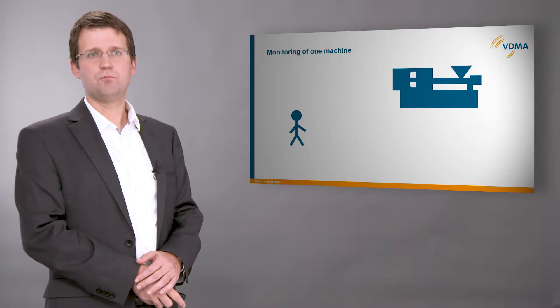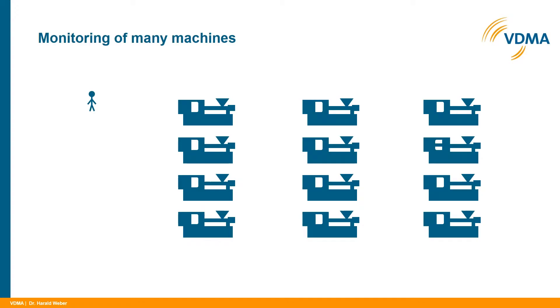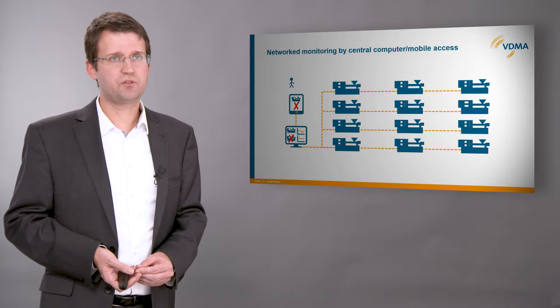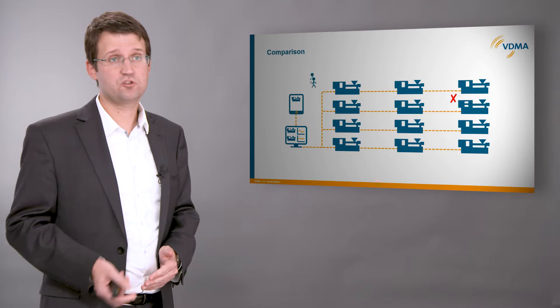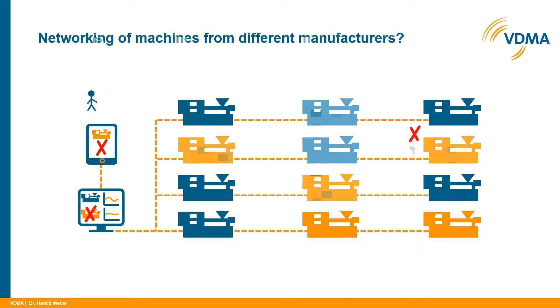I'd like to illustrate this with a simple example regarding remote control and monitoring of machines. Monitoring of one machine can be easily done by a single operator. This still works with a limited number of machines. When the number of machines increases, monitoring all machines becomes laborious and problems might be recognized only after a longer time. When the machines are connected to a central computer, the monitoring becomes much easier and problems are recognized much faster. But what happens when the machines come from different manufacturers?